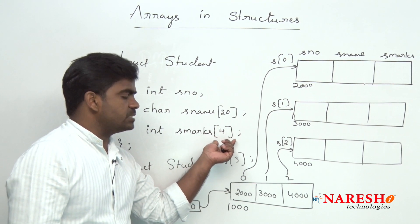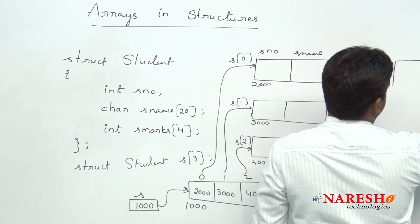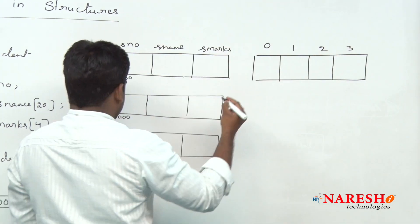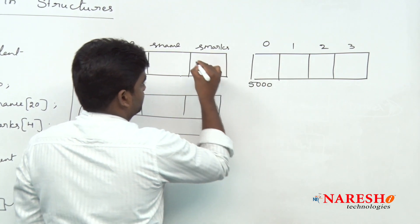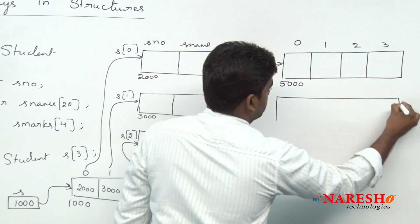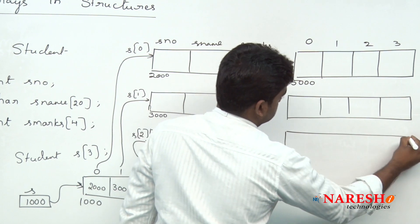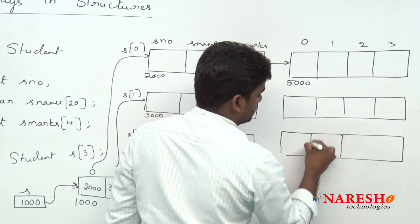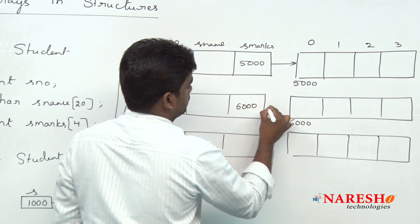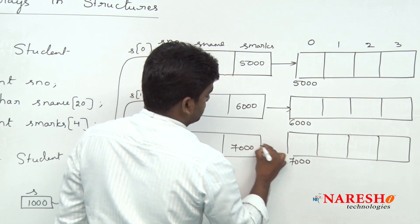So it gets memory allocation separately. For these 4 marks, memory is allocated for marks[0], [1], [2], [3]. Suppose the base address here is 5000 — 5000 will be stored, and in the same way for each record, the marks array gets memory allocation separately. The base address for the next record is 6000, then 7000, each connected accordingly.